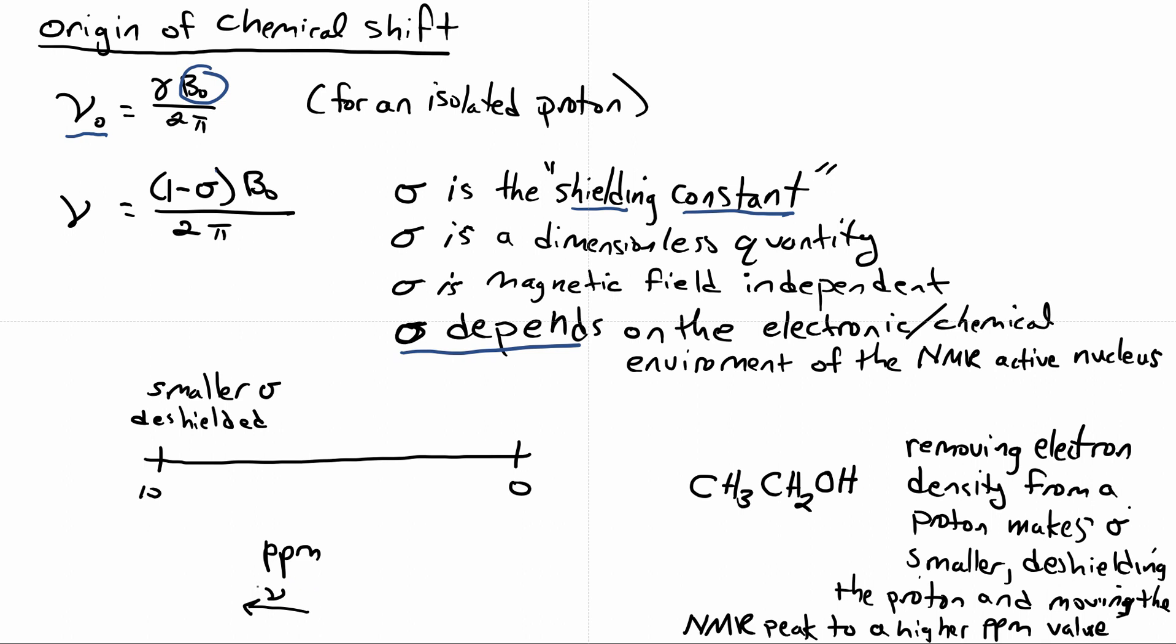But remember, previously, that's really a frequency scale that we've kind of normalized to. And so let's say we have ethanol here, and removing the electron density from a proton, say this proton or this proton, makes sigma smaller. So we know from organic that this oxygen will have some inductive withdrawal of electron density from protons near it.